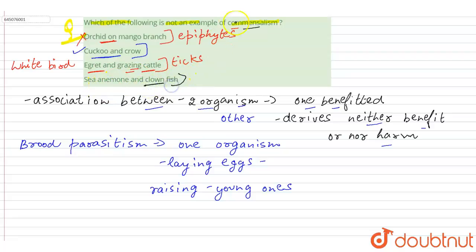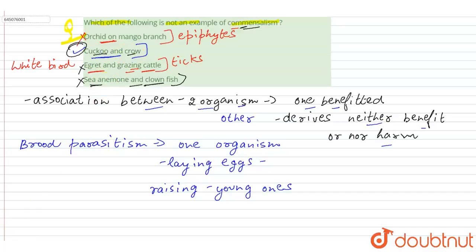The last option is sea anemone and clownfish. This is also an example of commensalism, where one is benefited but the other is neither benefited nor harmed. So the correct option is cuckoo and crow, as the others are examples of commensalism, while cuckoo and crow represent brood parasitism.